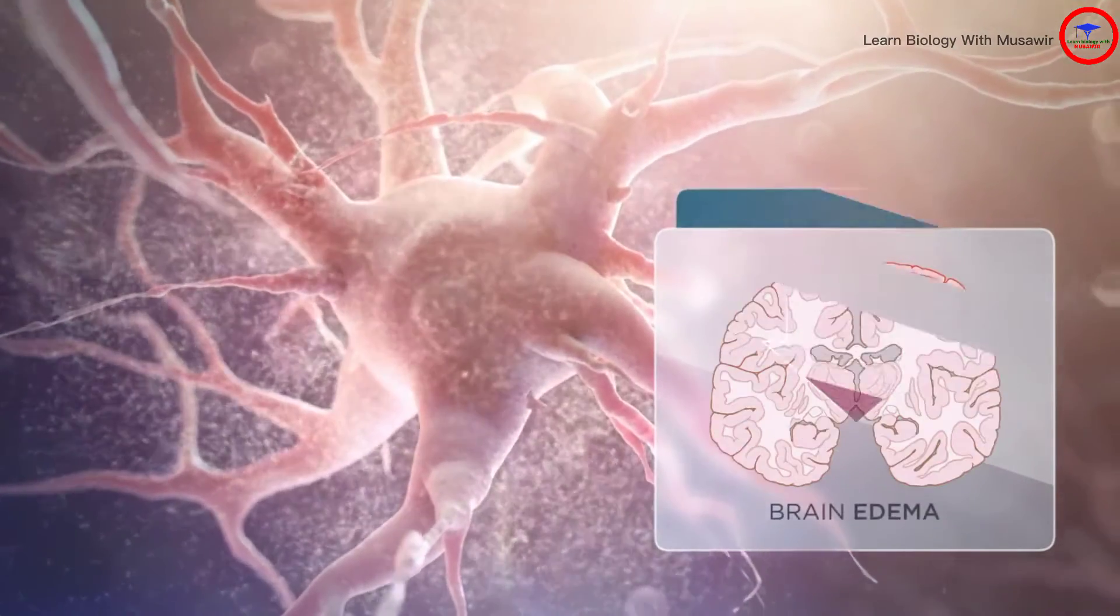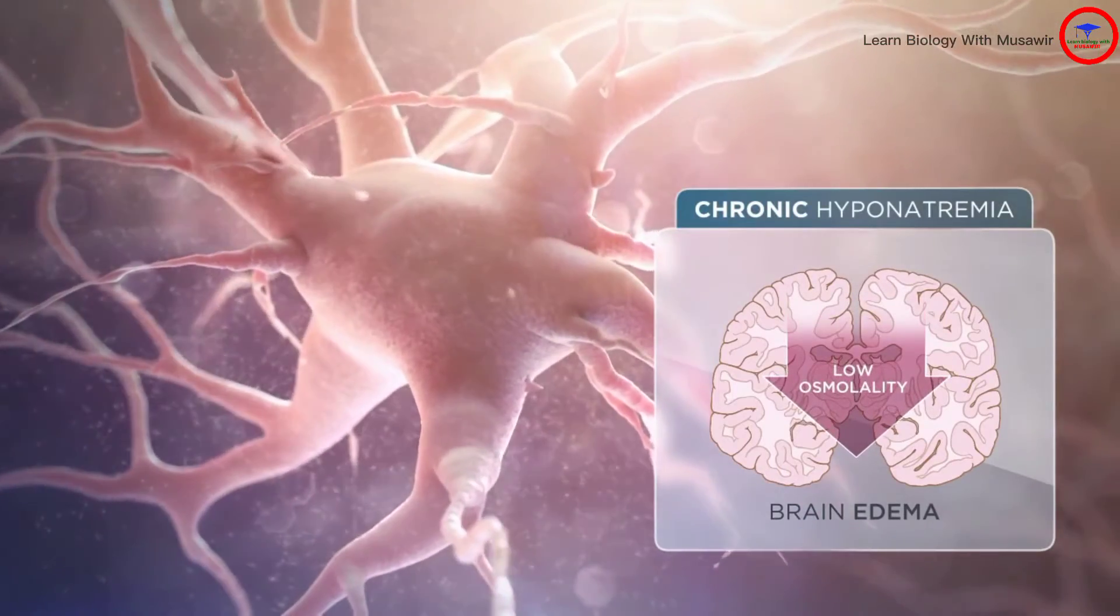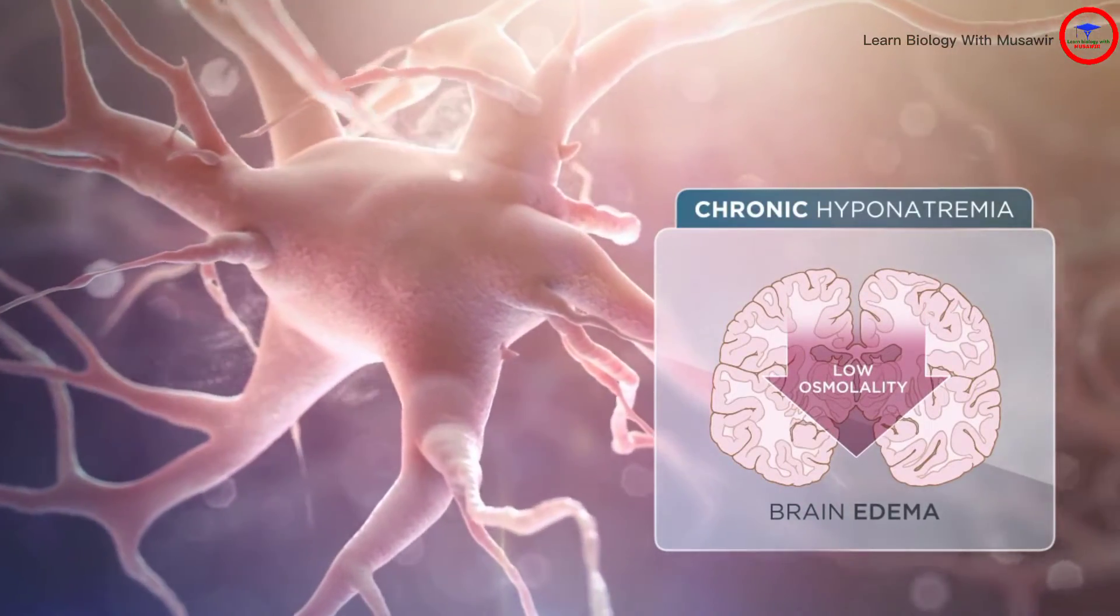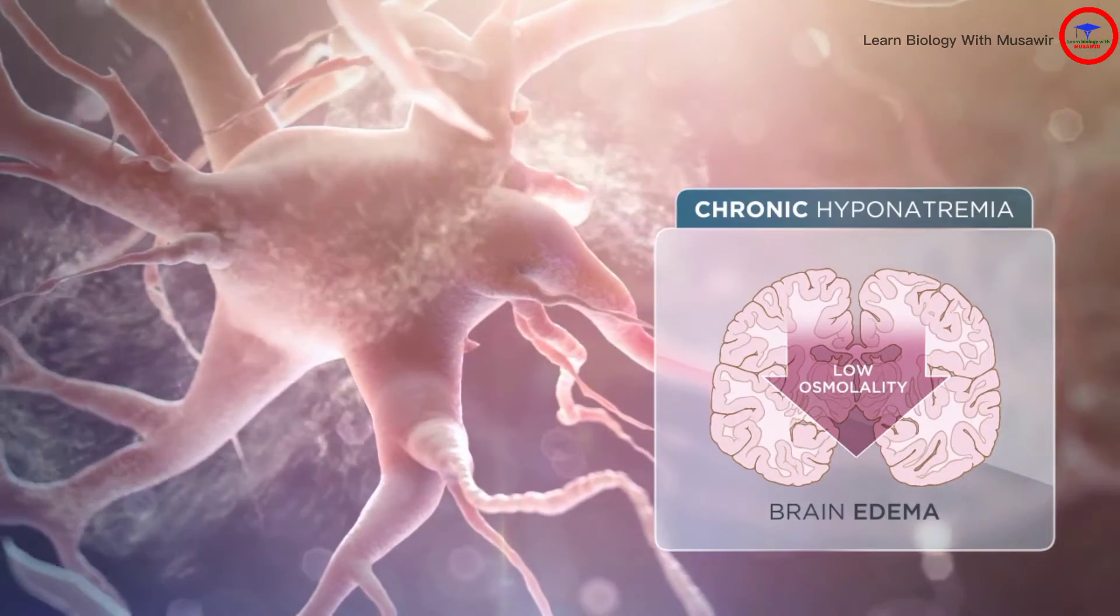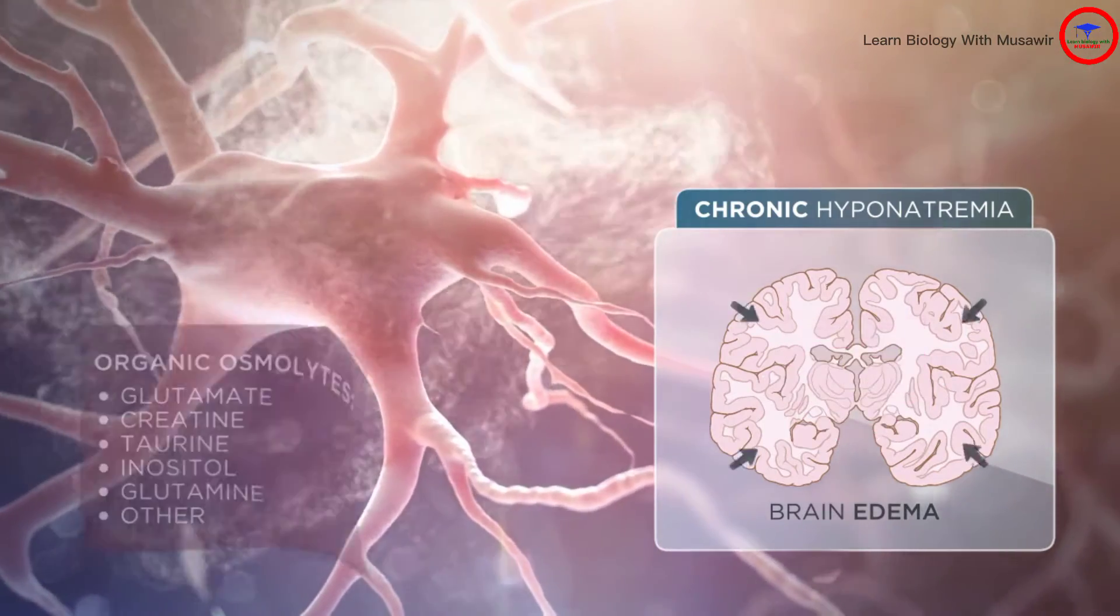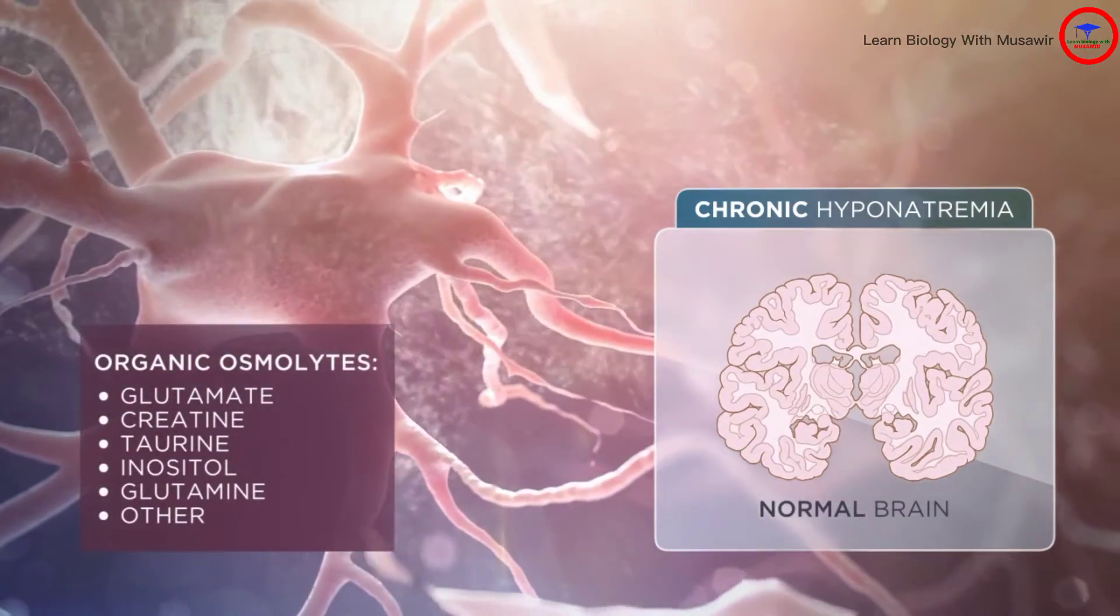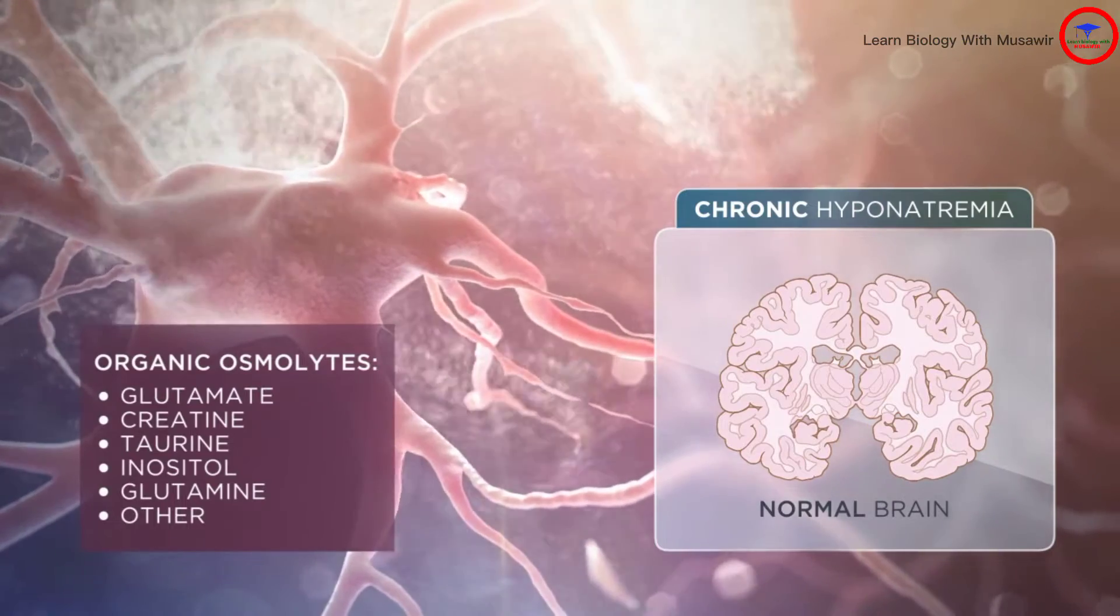In the case of chronic hyponatremia, however, the brain continues its adaptive response to regulate cell volume and minimize edema. The normalization of brain volume is completed within several days through loss of organic osmolites.